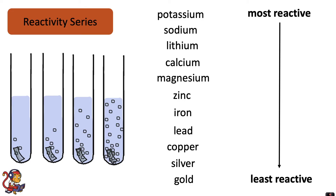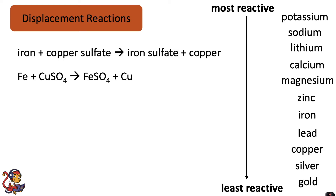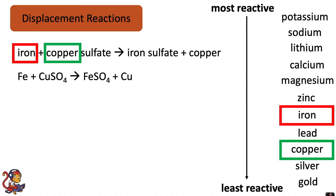The reason that these displacement reactions take place is all to do with reactivity. In the reactivity series, iron is more reactive than copper, and for a displacement reaction to take place, it only works if the element on its own is more reactive than the element in the compound. So in this equation, iron is on its own and that is more reactive than copper, which is at the moment bonded as a compound. So the iron will push out the copper and you end up with iron sulphate plus copper.